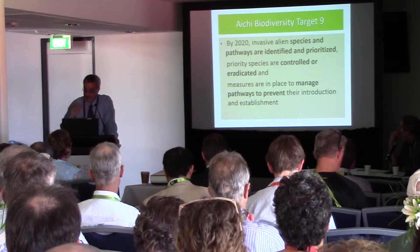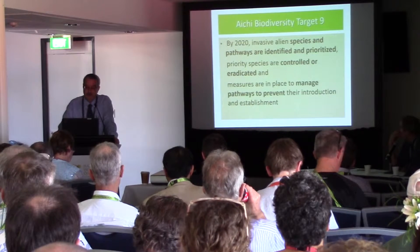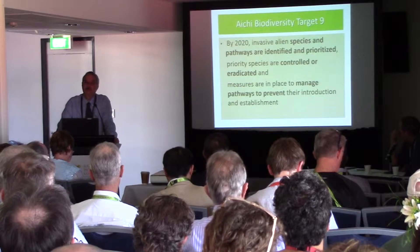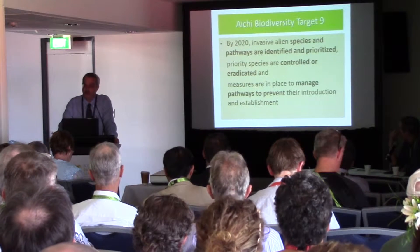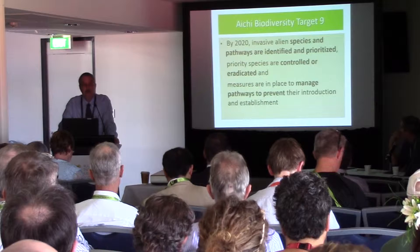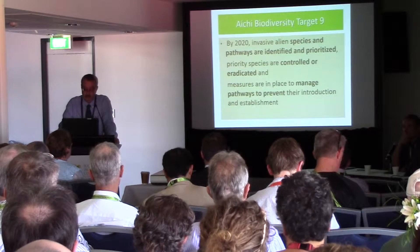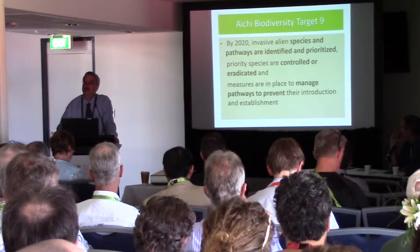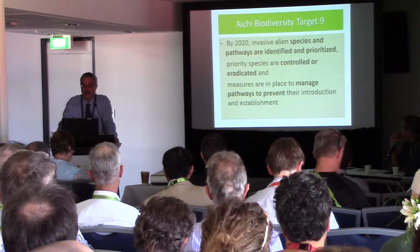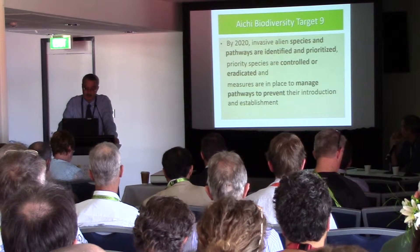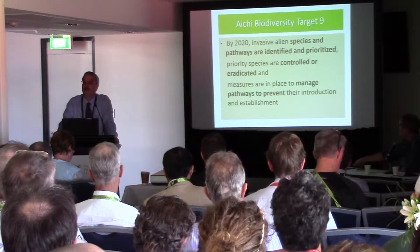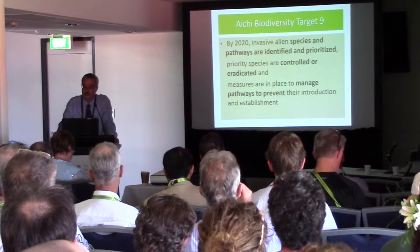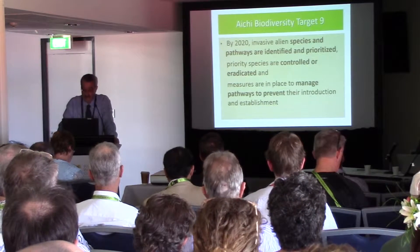You know that we have Aichi Biodiversity Target 9 as part of the current strategic plan for biodiversity, where governments have agreed that by 2020, invasive alien species and pathways that facilitate their spread are identified and prioritized. Priority species are controlled or eradicated, and measures are in place to manage pathways to prevent their introduction and establishment.